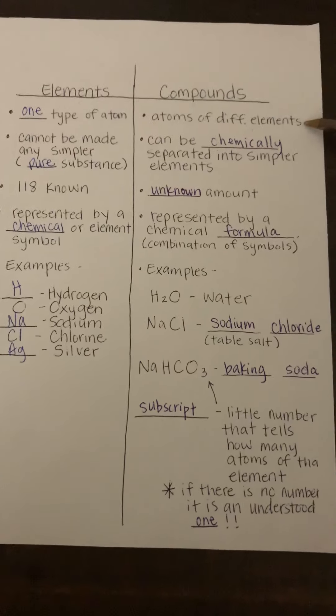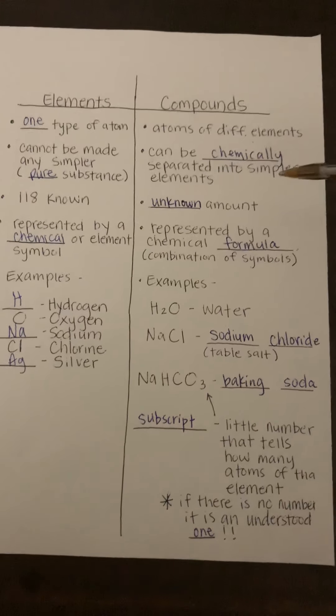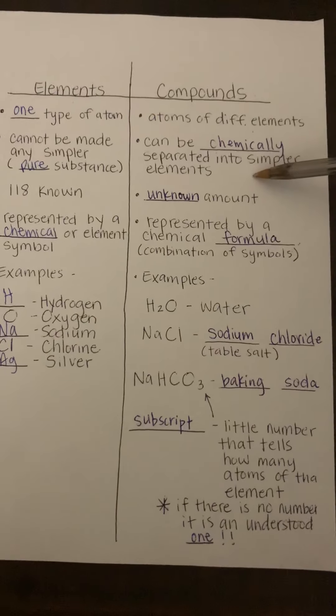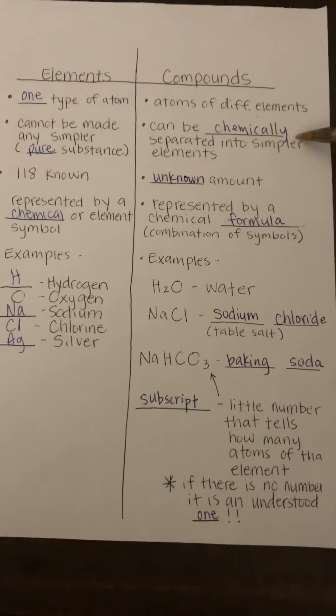Okay, so if there's two or more elements, then that means there's going to have to be different atoms. Compounds can only be separated chemically through a chemical change or a chemical reaction.